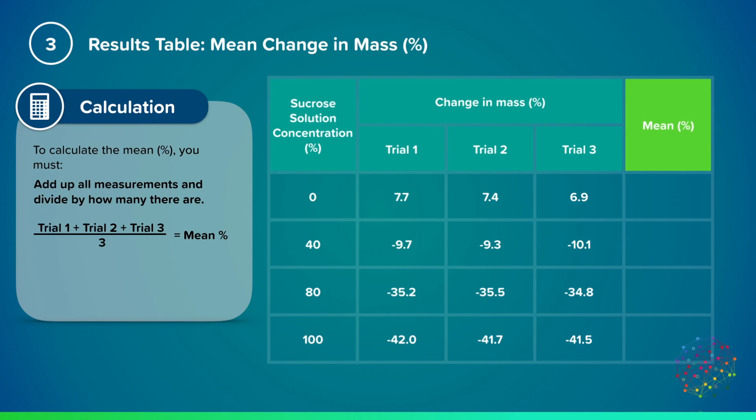The data here shows that for 0% concentration, trial one was 7.7 grams, so we'll add that to trial two of 7.4 grams, added to trial three of 6.9 grams, and then divide by three as we had three trials, which equals a percentage of 7.3 percent. Again we input this into our results table and do the same for the rest of our results.